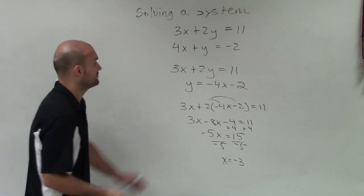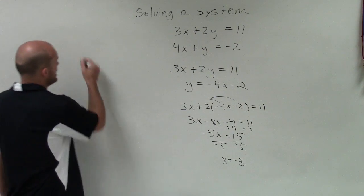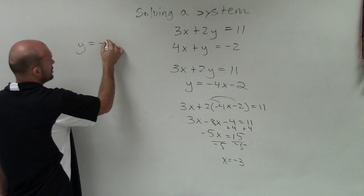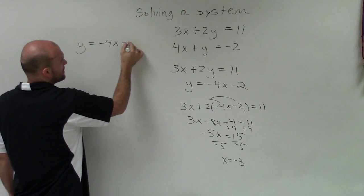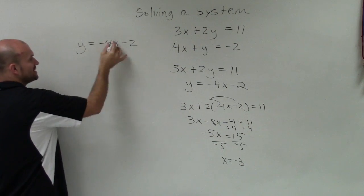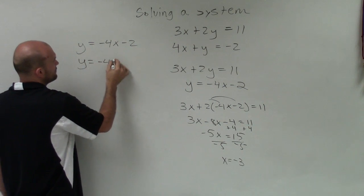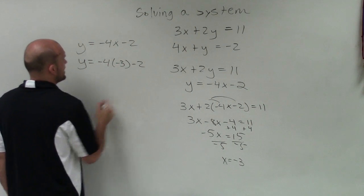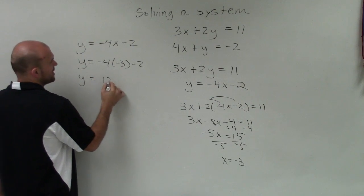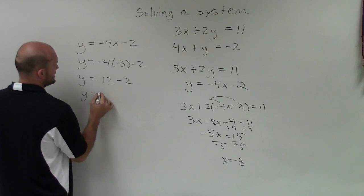Now I know the value of x is negative 3. To find my value of y, I'll take back my equation that I solved for y and plug in the value of x. So I have y equals negative 4 times negative 3 minus 2. y equals positive 12 minus 2. y equals 10.